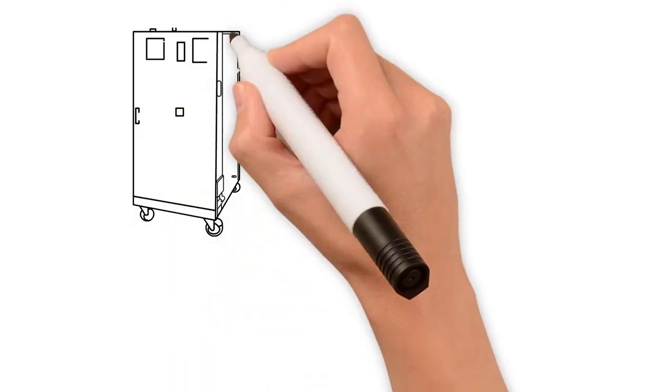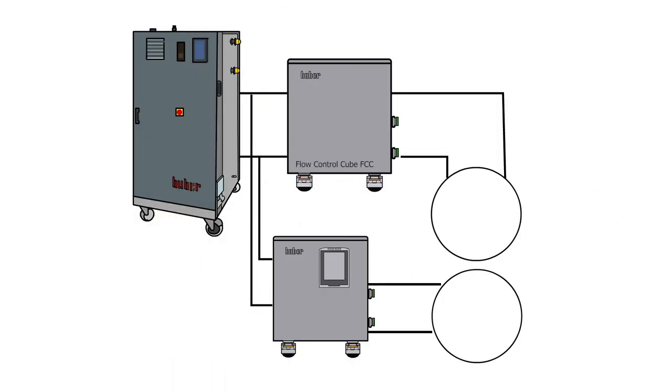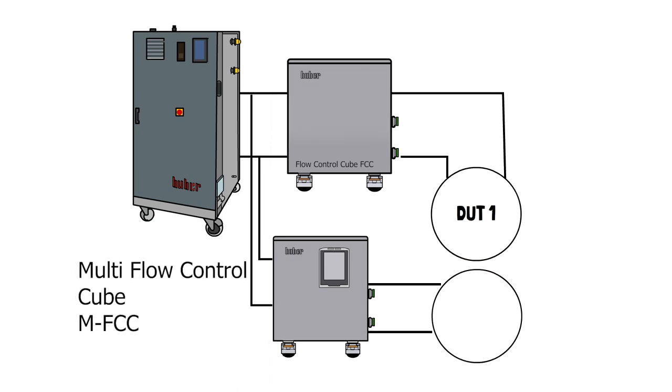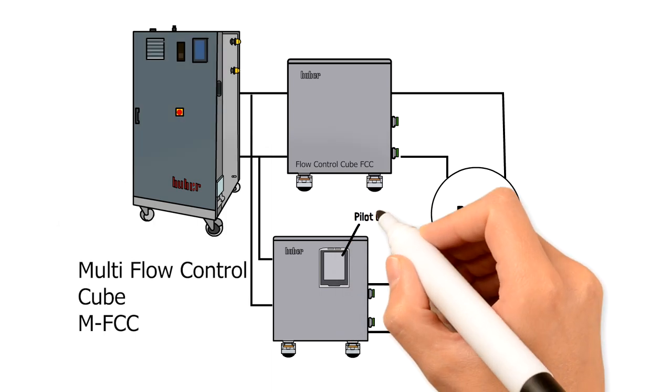The system can be extended with further flow control cubes for multi-circuit controls. Multi-flow control cubes MFCC are used from a second control circuit. Contrary to FCC, MFCC units have a self-contained controller.